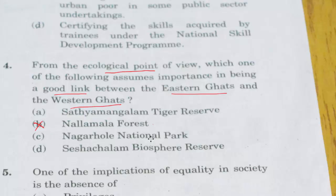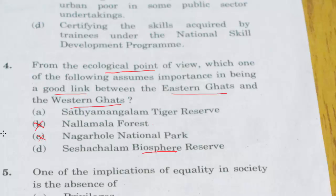Now we are left with options A, C, and D. Nagarhole National Park exists in Karnataka — the name is not Tamil or Keralite — and Karnataka leans towards the Western Ghats, so we take that out too. We're left with options A and D. The Nilgiri mountain forms a unique place where three states meet: Karnataka, Kerala, and Tamil Nadu. I'm thinking two Biosphere Reserves cannot exist close to each other, so I strike option D (Seesha Chalam Biosphere Reserve) and I'm left with A — Satya Mangalam Tiger Reserve.